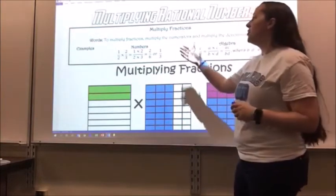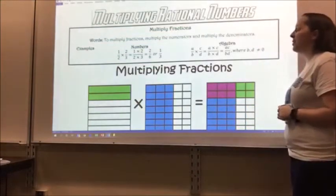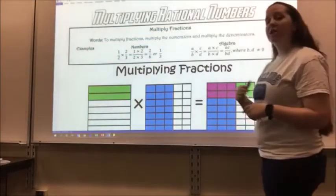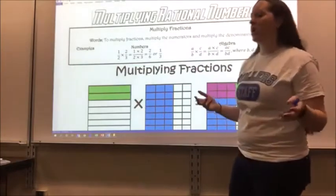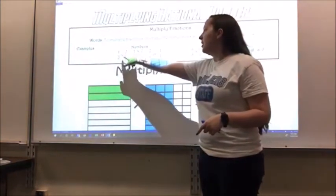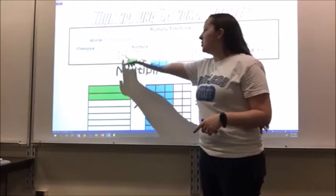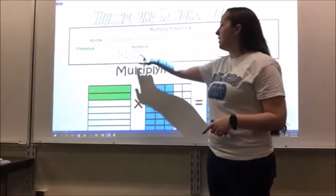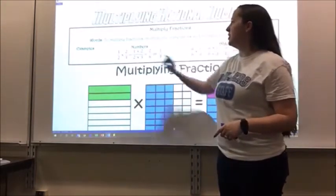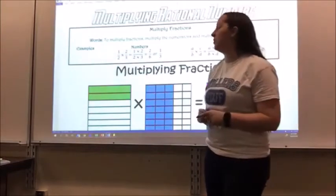To multiply fractions, I multiply the numerators and then multiply the denominators — basically, you just multiply straight across. For example, 1/2 times 2/3: I multiply 1 times 2, which is straight across, and 2 times 3, which gives me 2/6, and then I reduce it to 1/3.